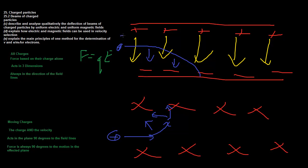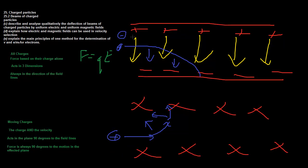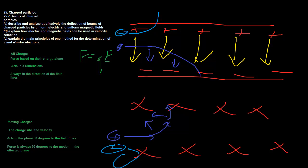Negative charges move in exactly the opposite direction in both fields. Electrons will almost always have a greater deflection than protons - that's simply because they're lighter. The same force produces a greater acceleration because they have lower mass. That's just basic Newtonian mechanics.